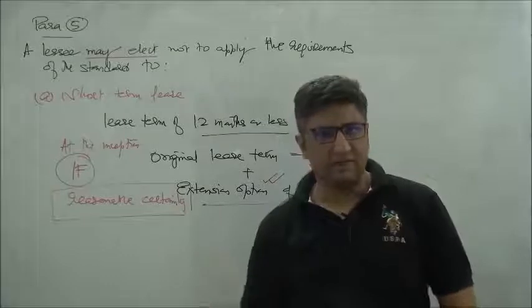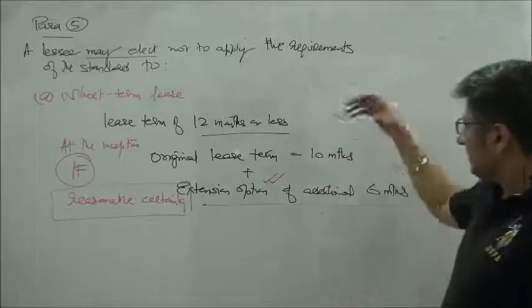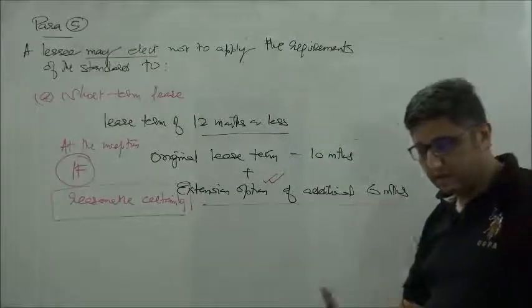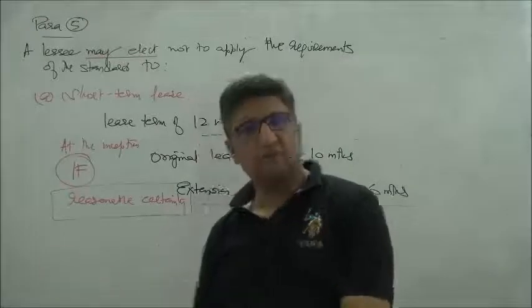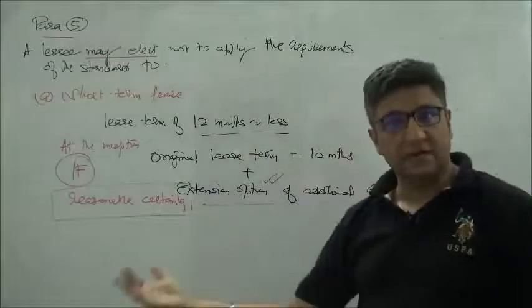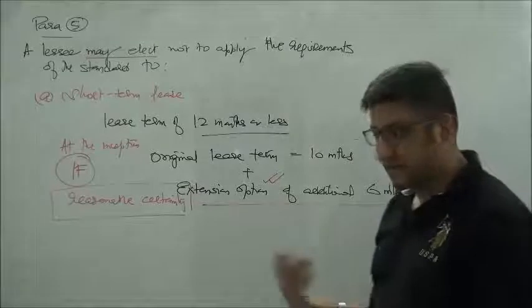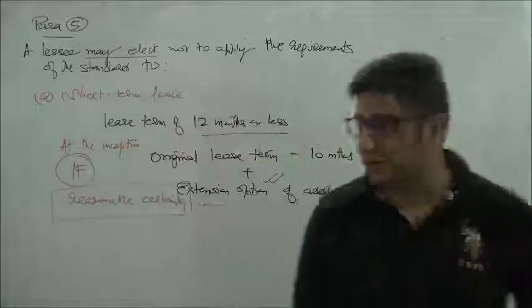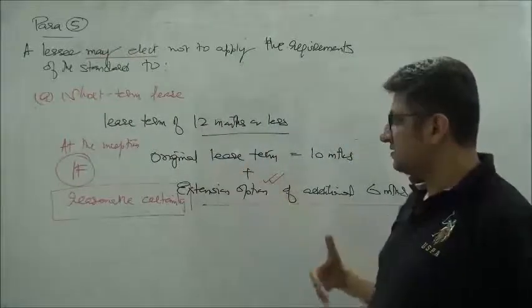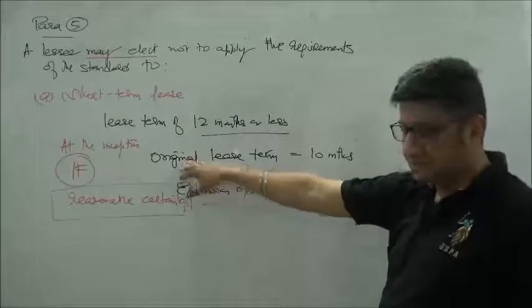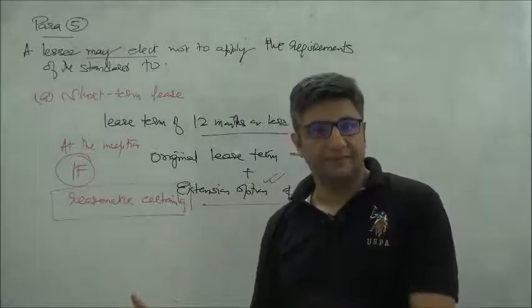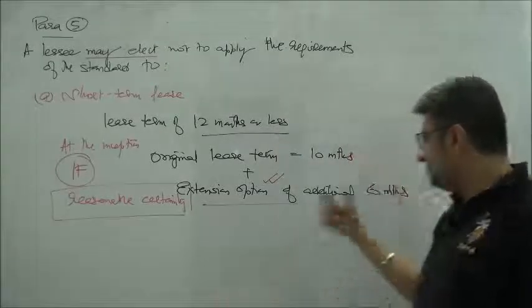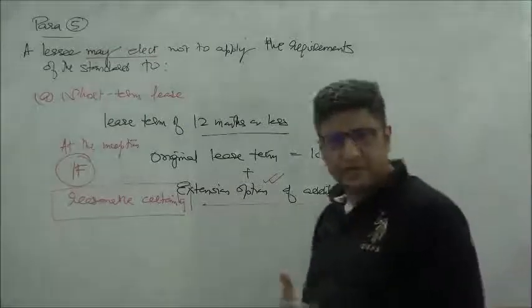An example: the lessor says use this asset for 10 months and you can use it for an additional six months by paying 10% of the market rate, or maybe without any consideration. When this is the case, it's reasonably certain at the starting point that the option will be exercised.